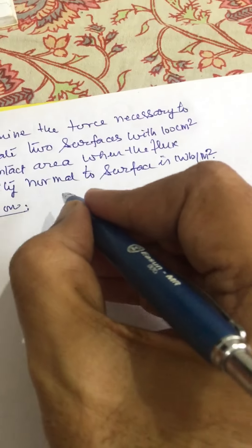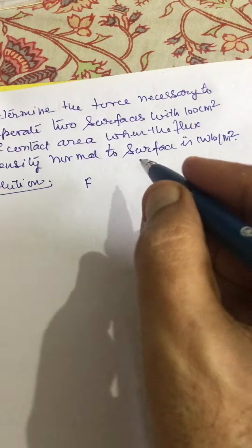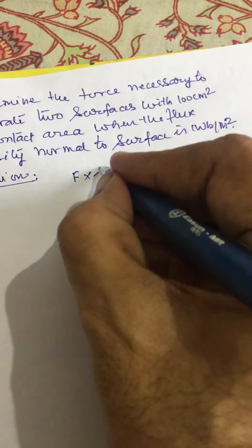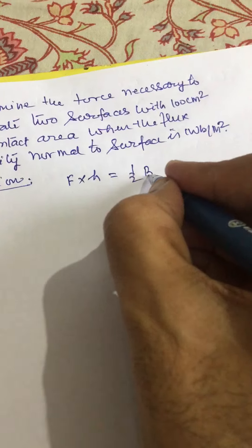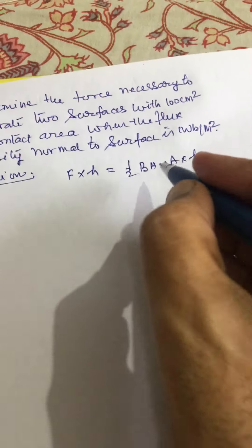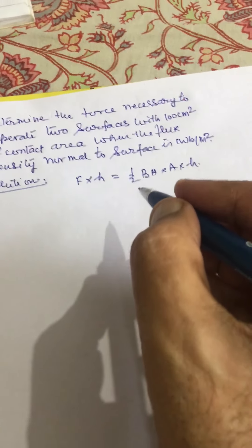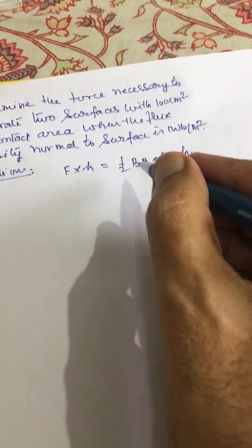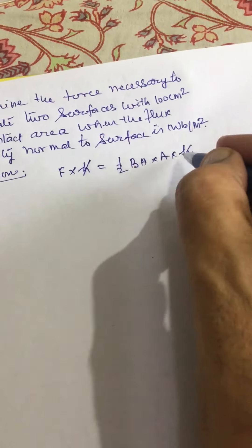Suppose applied force is F and distance by which it is separated is H. So we will have F × H equal to half BH into A into H, where B is flux density and H is intensity. So this H cancels with this H.